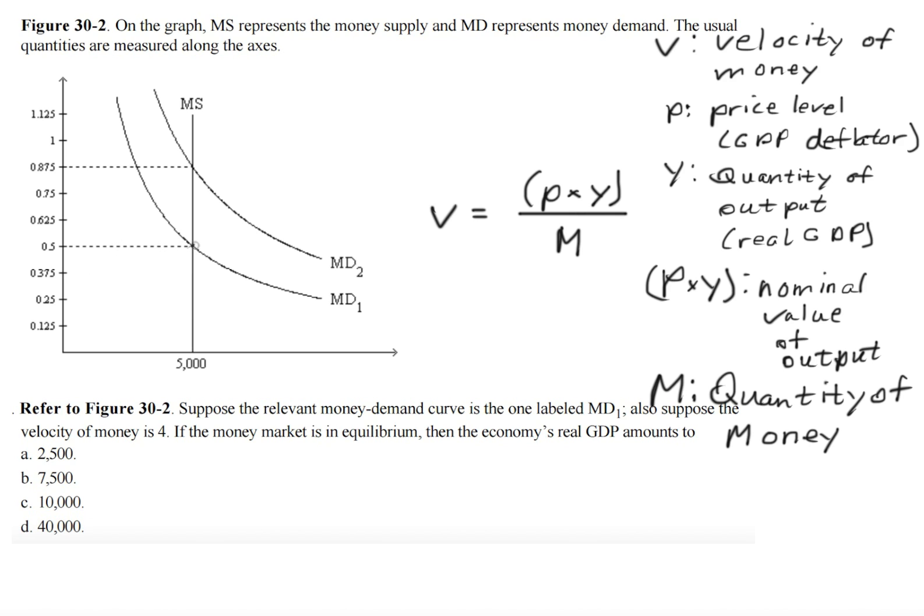You begin the question by first finding the equilibrium point and figuring out, okay, I have my quantity of money right there and I have my price level.